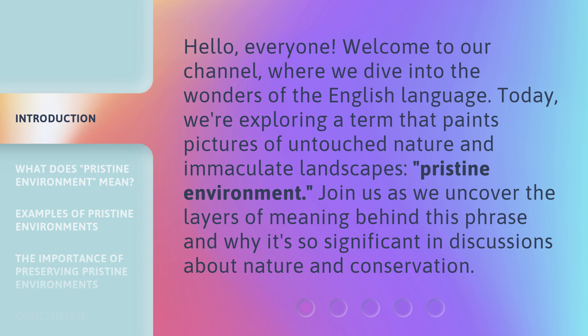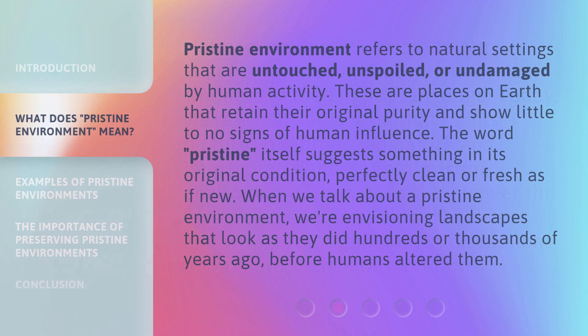Join us as we uncover the layers of meaning behind this phrase and why it's so significant in discussions about nature and conservation. Pristine environment refers to natural settings that are untouched, unspoiled, or undamaged by human activity. These are places on Earth that retain their original purity and show little to no signs of human influence.